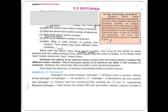Next we have the isotopes of hydrogen. Hydrogen has 3 isotopes. Hydrogen-1 (protium) has no neutrons. Almost all hydrogen is hydrogen-1. Its symbol is H with atomic number 1 and mass number 1.